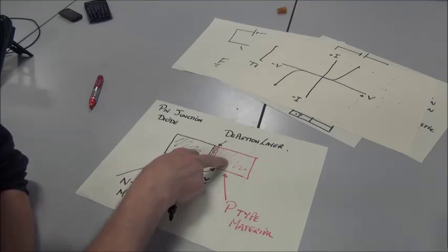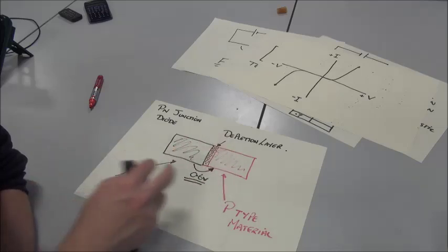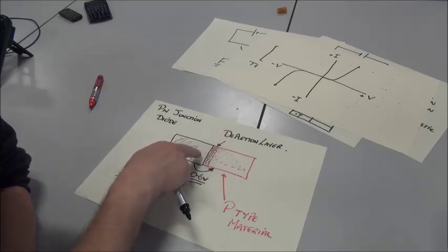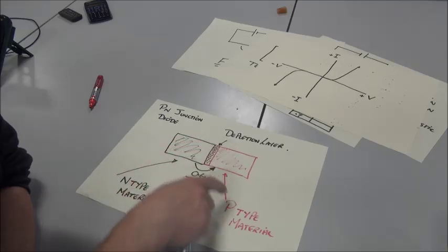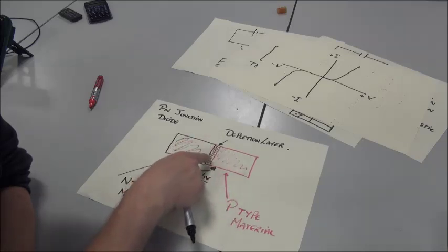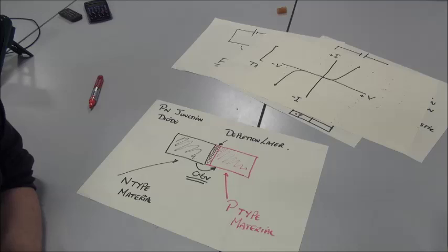When both materials are joined together, a depletion layer is formed. The excess electrons are attracted over to the other side material, and the reverse happens with the P-type material. And we have a depletion layer where there are very few charge carriers.